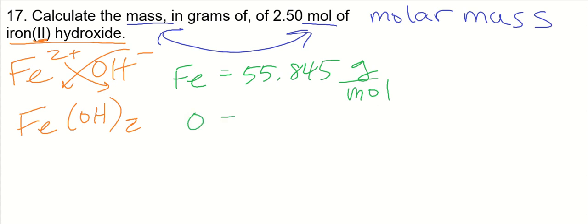How many oxygens do we have? We have two oxygens because you've got to distribute that two outside the parentheses, so that's 15.999 times 2, which is going to be 31.998 grams per mole.